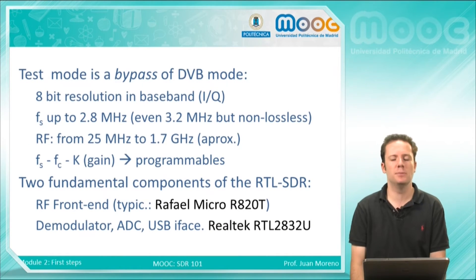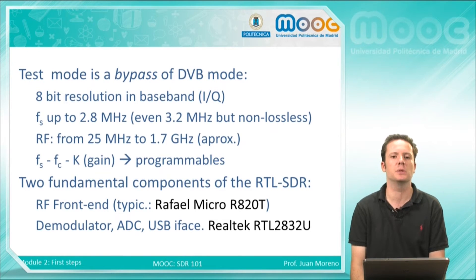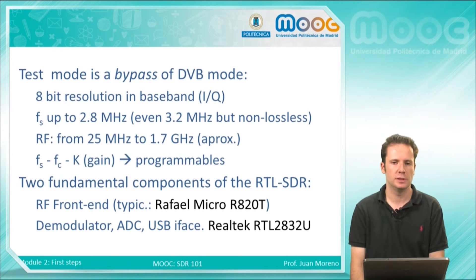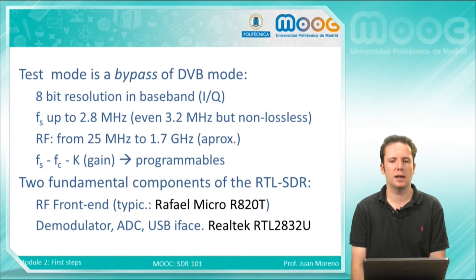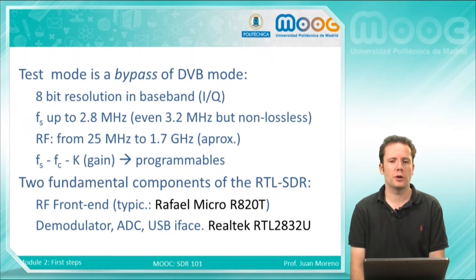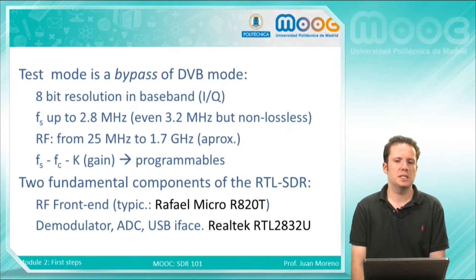The test mode is the generic mode which allows us to receive signals on many different frequencies. This test mode is actually a bypass of the television mode — the DVB mode. This receiver has 8-bit resolution in baseband, in both phase and quadrature. The sampling frequency is up to 2.8 MHz; you can also work at 3.2 MHz but you may have some losses.